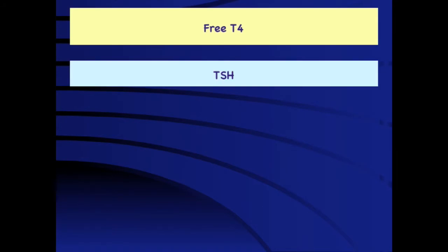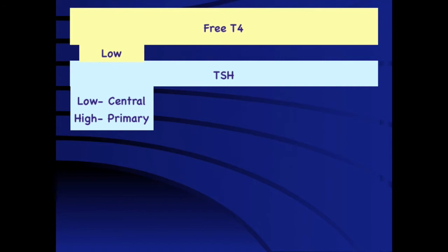The best way to assess thyroid function in a child is to look at free T4 and TSH levels together. If free T4 is low and TSH is also low, this indicates central or secondary hypothyroidism. On the other hand, if free T4 is low and TSH is high, it is clearly indicative of the common garden variety of primary hypothyroidism.